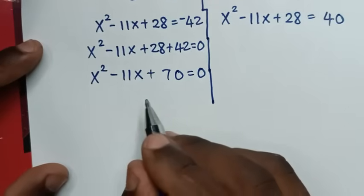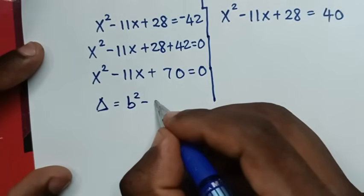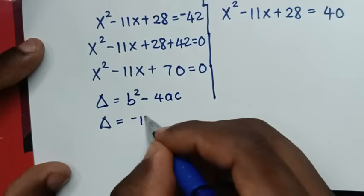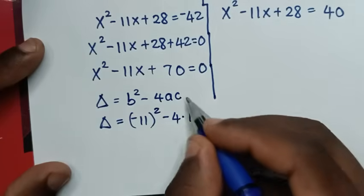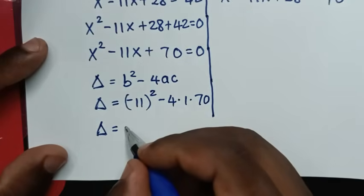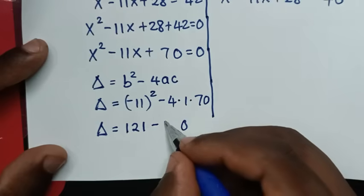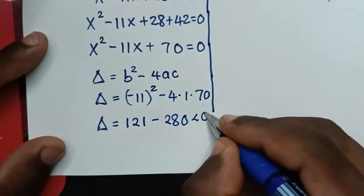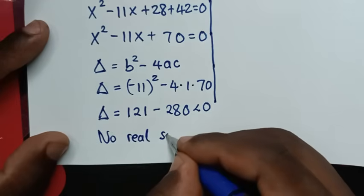We check whether x squared minus 11x plus 70 equals 0 has real solutions using the discriminant formula: D equals b squared minus 4ac. So D equals negative 11 squared minus 4 times 1 times 70 equals 121 minus 280, which is less than 0. Since the discriminant is negative, there are no real solutions from this case.